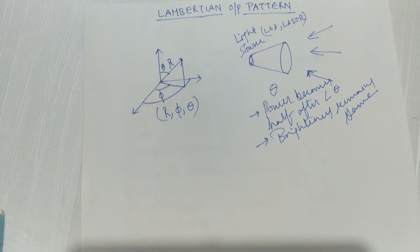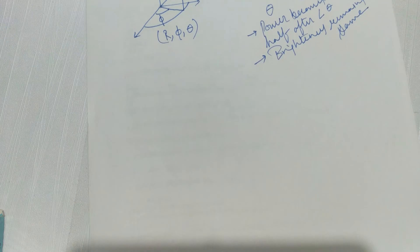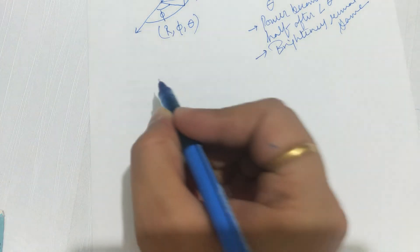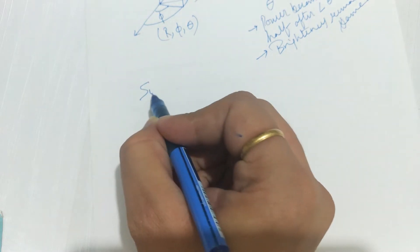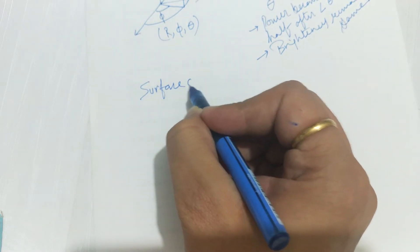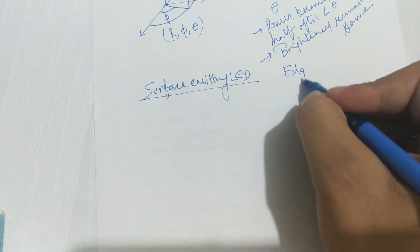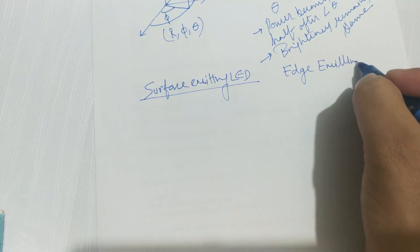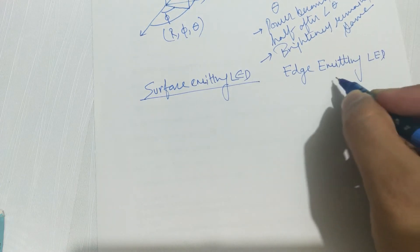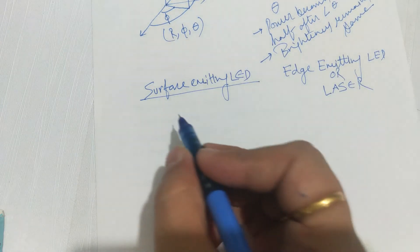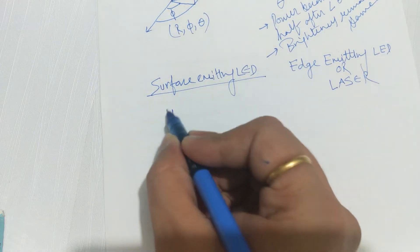Now let us see the relation between power and the angle theta. We have two types of sources: one is surface emitting LED and the other is edge emitting LED or laser. In the case of surface emitting LED, the relation is quite simple.